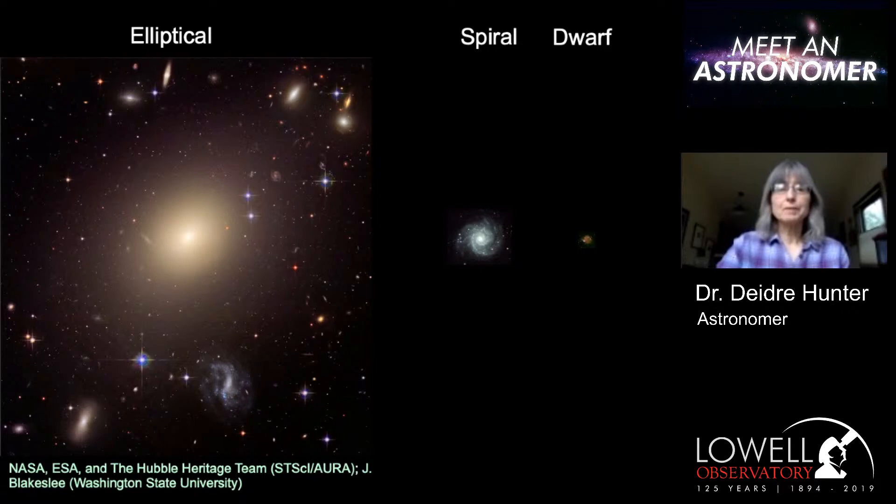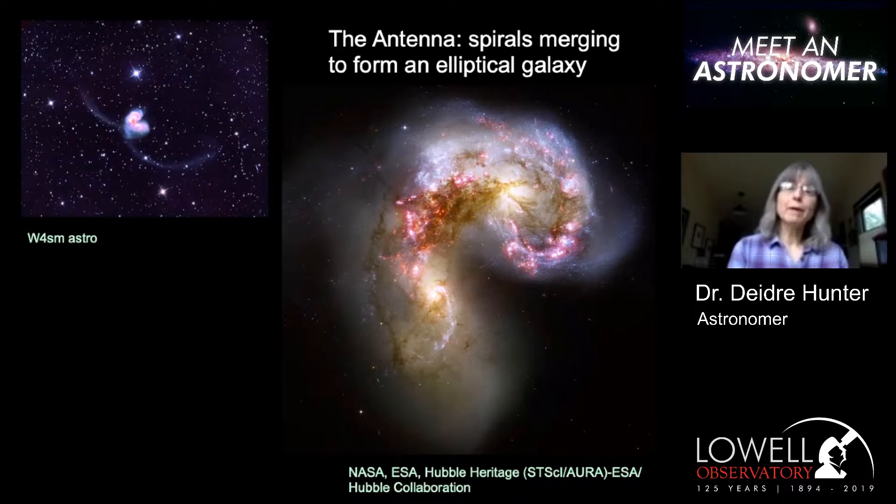The elliptical galaxies are formed by the merger of spiral galaxies, and so that's why they get to be so large — because they're merging these other large galaxies together.